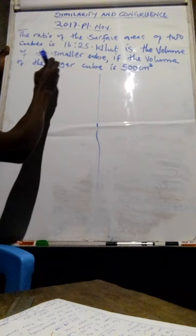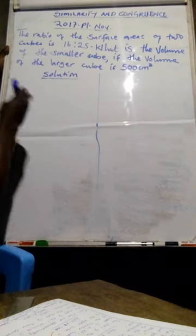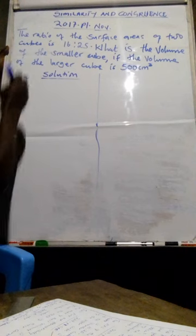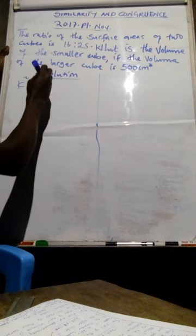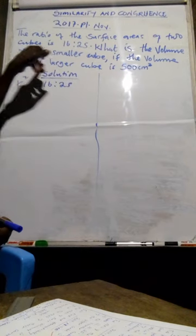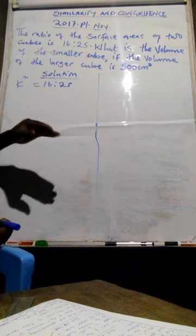So what you do before you start your solutions, you write area scale factor. Area scale factor, K to the power 2 always, which is equals to 16 to 5. So the question is, we are looking for volume, so we have to change area scale factor to volume scale factor.